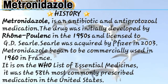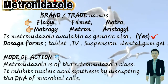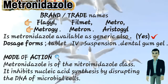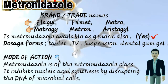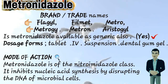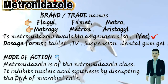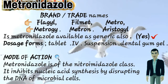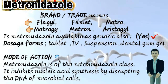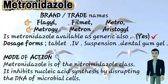Metronidazole is widely prescribed in the United States. The next question is mode of action — how metronidazole works in our body. Metronidazole belongs to the nitroimidazole class and it inhibits nucleic acid synthesis by disrupting the DNA of microbial cells, thereby stopping the growth of microorganisms in our body.